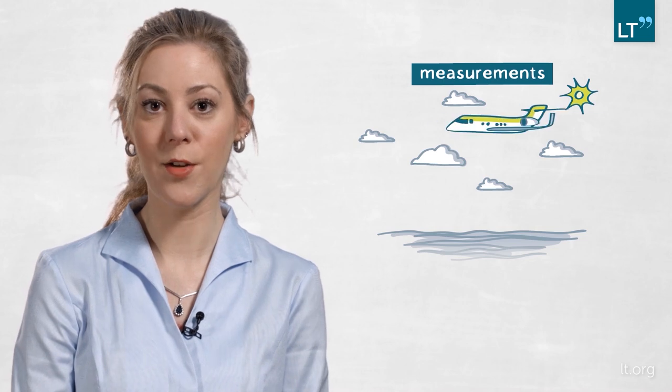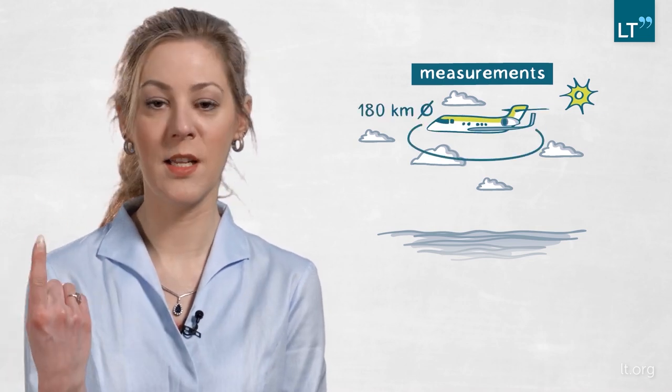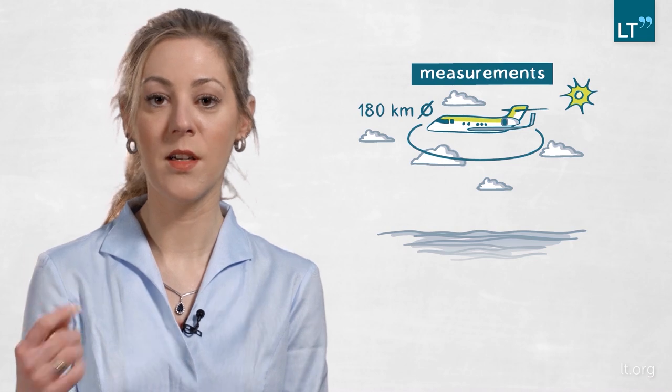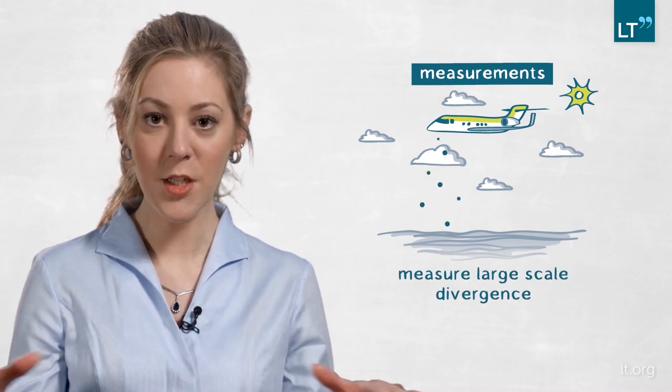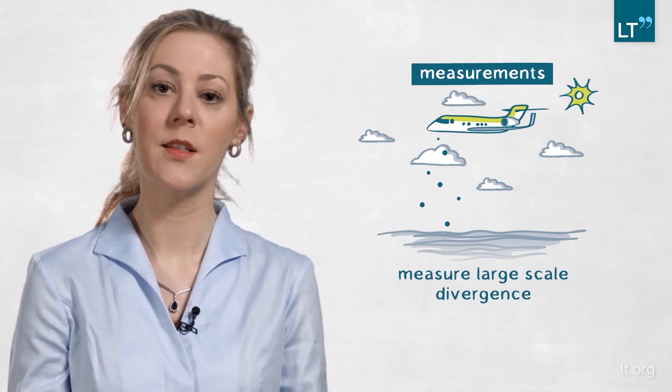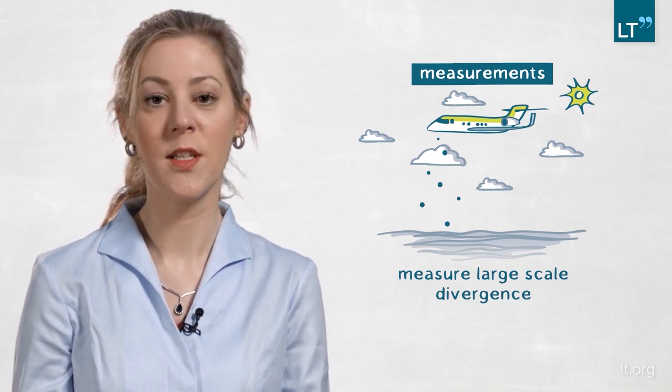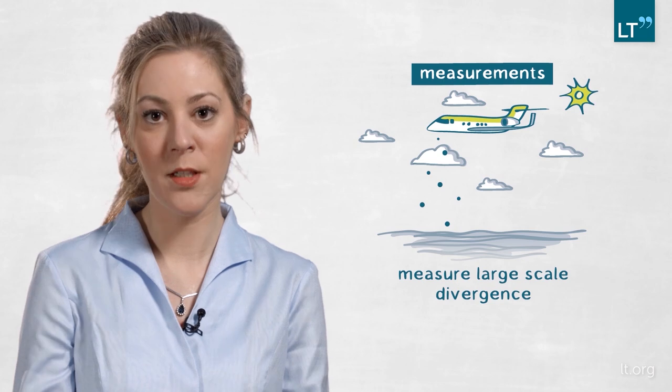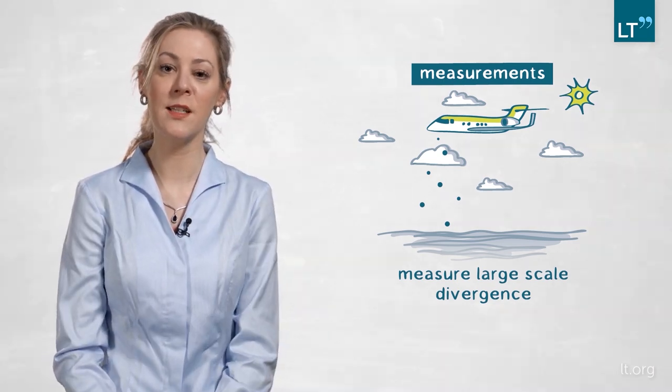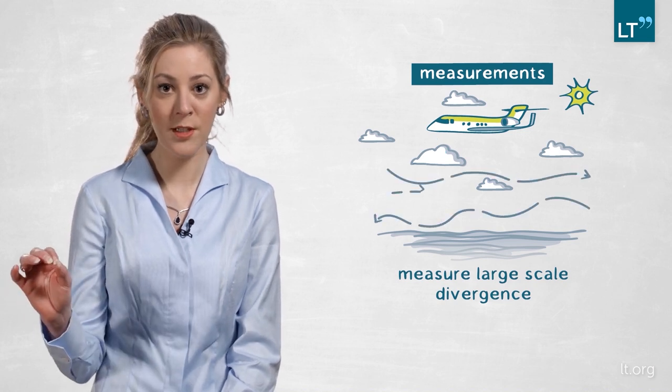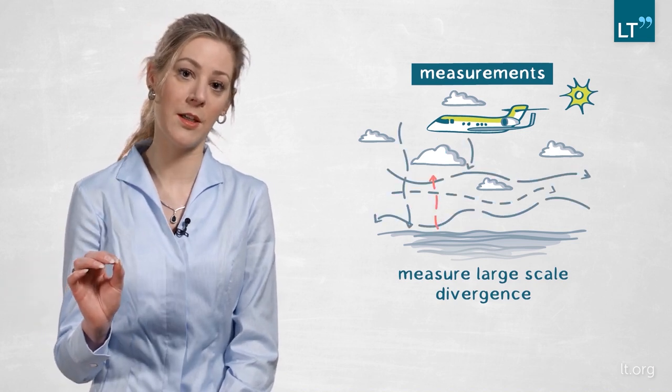These measurements were taken by my colleagues over the Atlantic and what they did was to fly an aircraft in circles of roughly 180 kilometers diameter, while they were dropping instruments that measured the large scale divergence. And this divergence by mass conservation is directly related to the vertical velocity. And what they found was a surprisingly large variability, both in the horizontal direction as well as in the vertical direction.